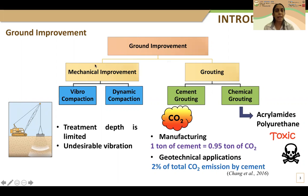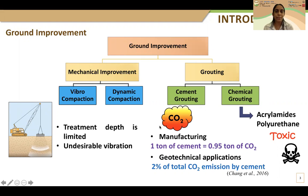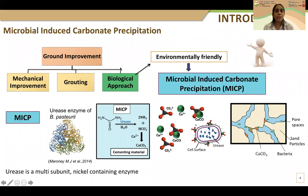In the case of mechanical improvement, the treatment depth is limited and it is mostly suitable for coarse-grained soil. In the case of the grouting method, it is suitable for most soil types, especially fine-grained soil, but the grouting materials are sometimes not environmentally friendly. For example, cement contributes to large amounts of carbon dioxide emission, and in the case of chemical grouting, most chemicals are very toxic for humans and also for nature.